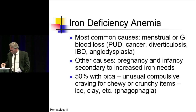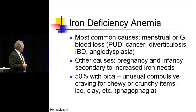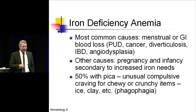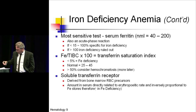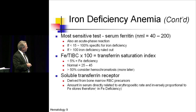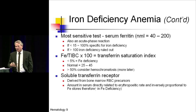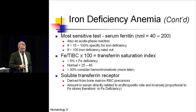With iron deficiency anemia, blood loss is by far the most common cause in the United States. Other causes include pregnancy and infancy due to increased iron needs. About 50% of the time it's associated with pica — I recall a patient who couldn't stop eating ice and was indeed iron deficient. The most sensitive test for identifying iron deficiency is ferritin, with normal levels of 40 to 200. A don't-be-fooled element: ferritin is also an acute phase reactant, so in an ill or inflammatory patient, ferritin may be elevated even if the patient is iron deficient.